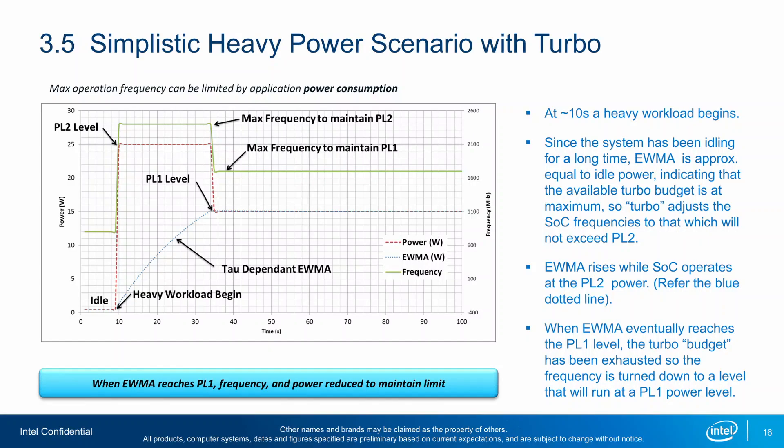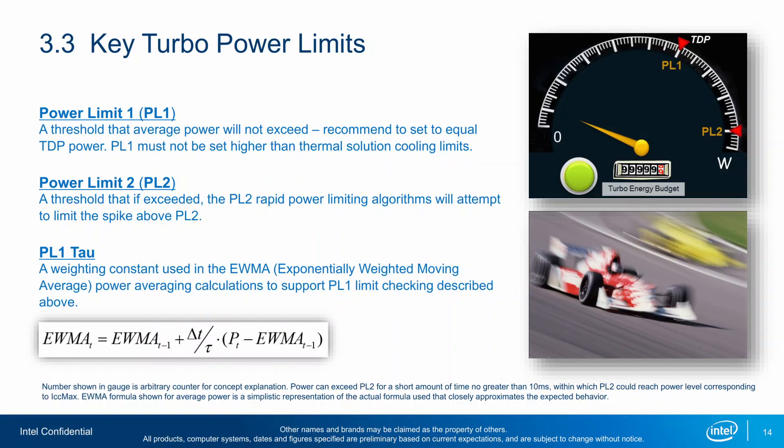Traditionally, when we talk about configuring Turbo Boost 2.0, we refer to the Turbo Boost algorithm, which works according to a proprietary EWMA formula. Usually, there are only three parameters to consider: PL1, PL2, and Tau.